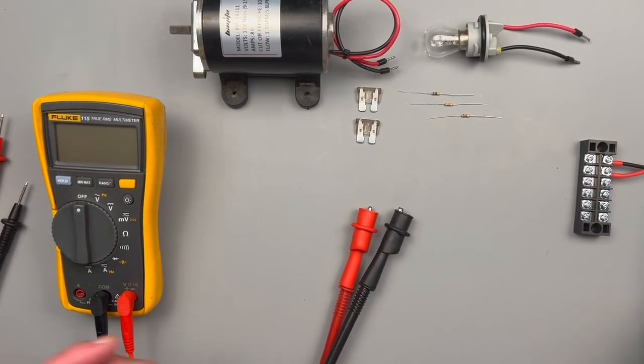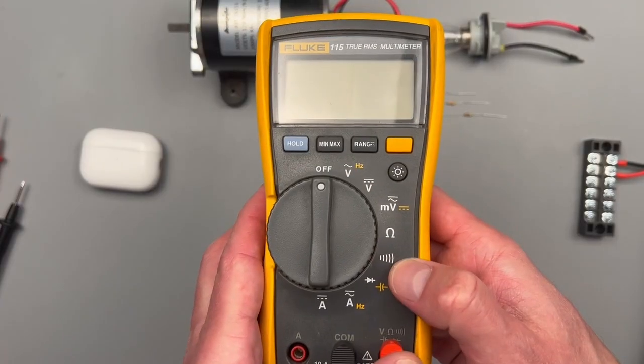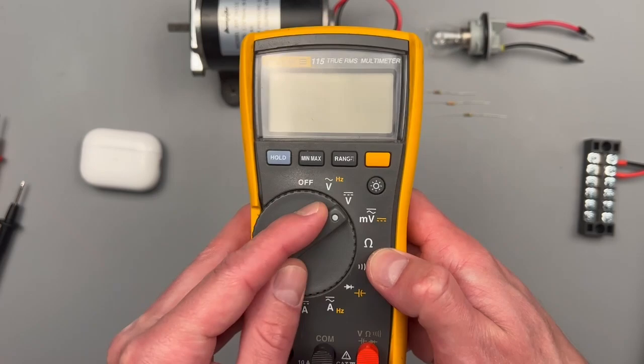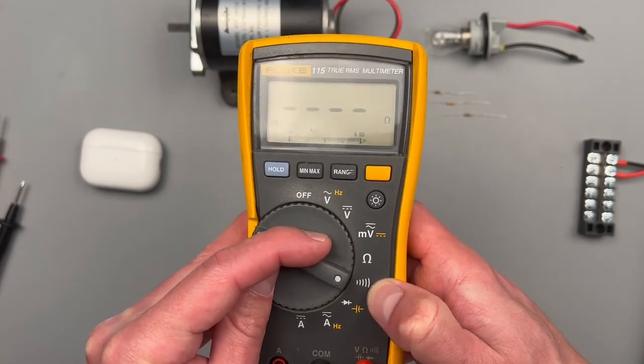On an auto ranging meter we just have two different settings: resistance and continuity.